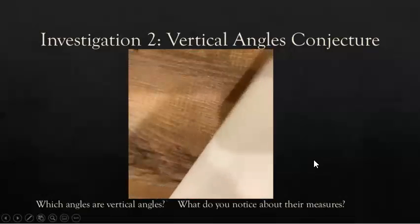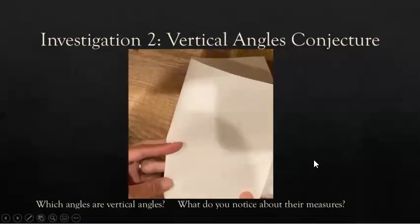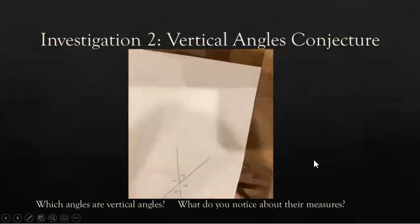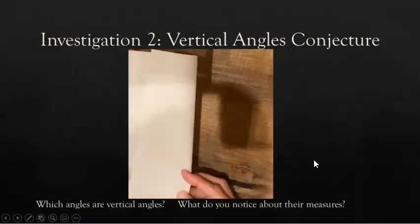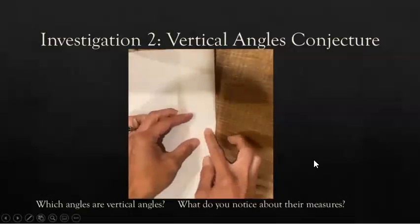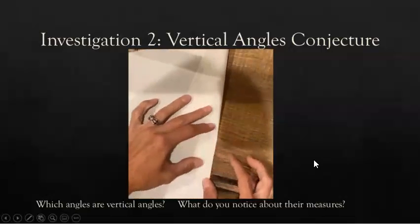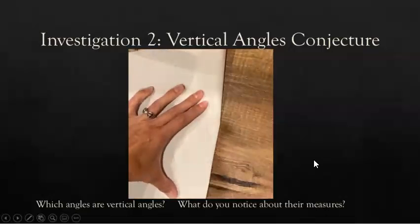Then fold the paper so that the vertical angles lie over each other. You're going to have to fold it right on the intersection and then maybe rotate a little bit so the angles are right on top of each other. What do you notice? I checked both sets of vertical angles. Go ahead and repeat this investigation another time with a different pair of intersecting angles. Make sure you make these angles the second time very different from what you made the first time. When you fold them on top of each other, what do you notice about their measures?